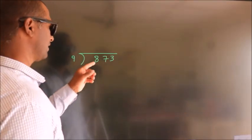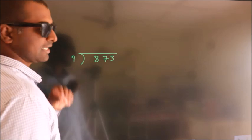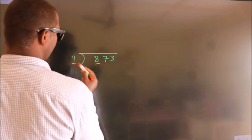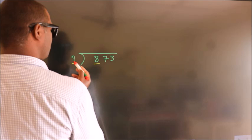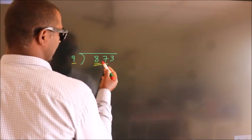How to divide 873 by 9? See, here we have 8, here 9. 8 is smaller than 9, so we should take two numbers, 87.